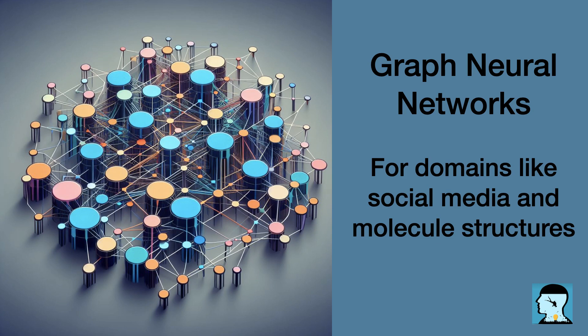The general framework of graph neural networks is like a team of detectives working together to solve a mystery. Each detective represents a node in the graph, and they communicate with each other to gather clues and solve the case. The key components are: first, node representations — each node starts with some initial features about the case. Second, message passing — just like detectives sharing clues, nodes share information with their neighboring nodes, and each node updates its representations based on the information it receives from its neighbors.